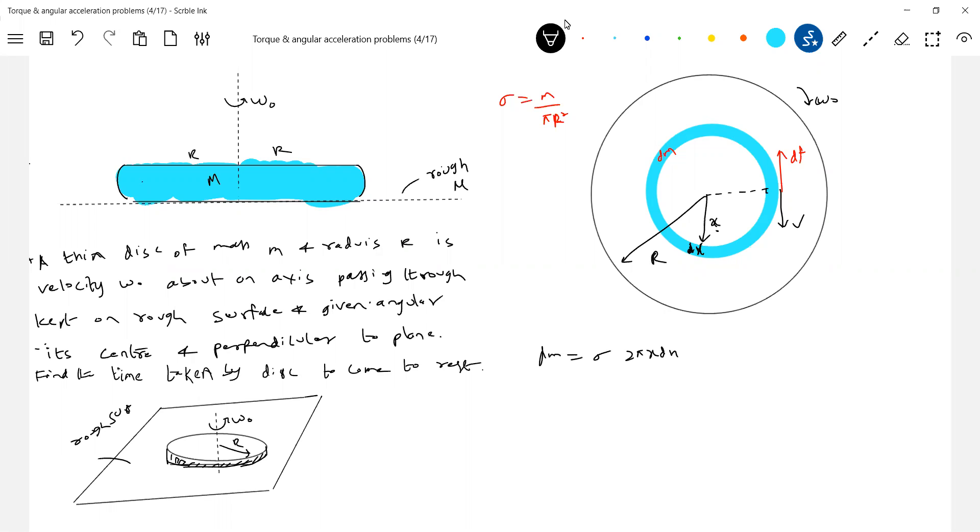Area of this particular circular strip is sigma into 2 pi x dx. Then what is the df value? df value should be equal to mu into dm into g. Substituting this, mu 2 pi sigma x dx into g.